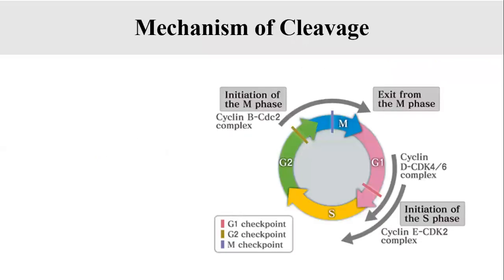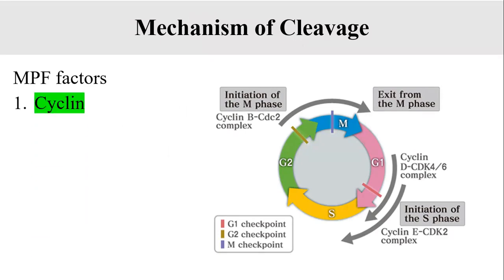There are factors that influence cleavage initiation. The major factor is MPF — Mitosis Promoting Factor. MPF has two parts: one is Cyclin B, which is the larger part, and the other is CDC-2 (also called CDC-K2), which is the smaller part.